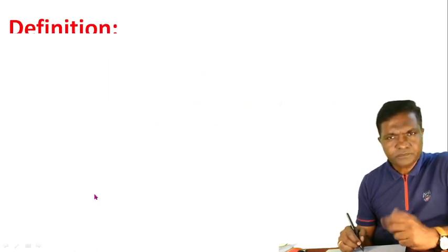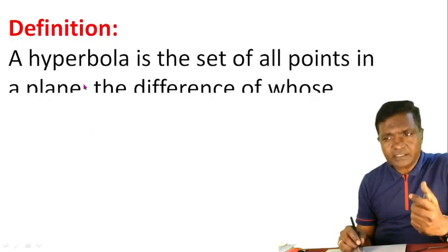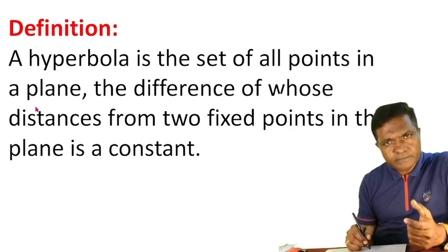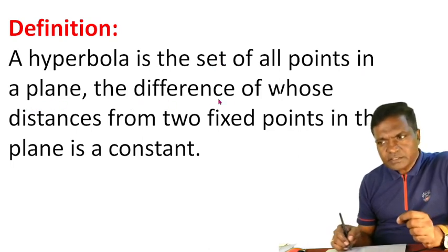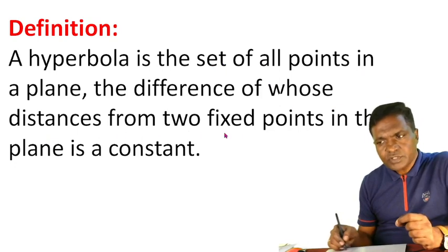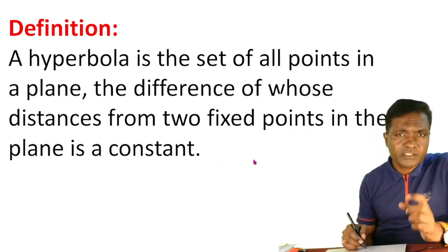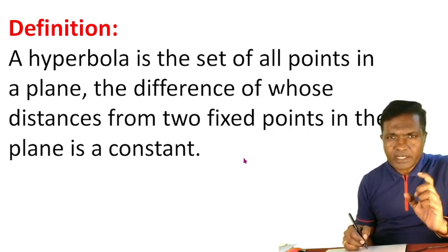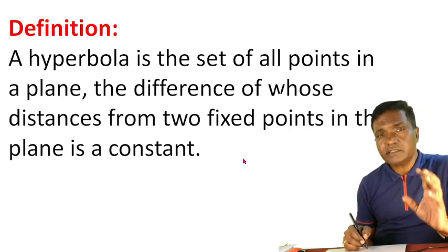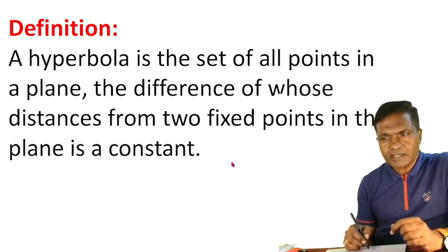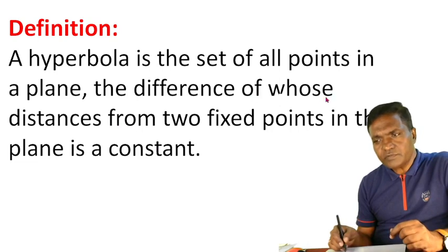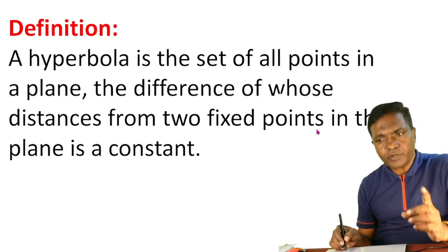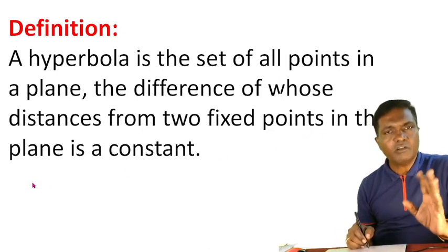Definition: hyperbola is the set of all points in a plane such that the difference of whose distances from two fixed points in the plane is constant. So, hyperbola is a set of points where the geometrical condition satisfies — the difference of distances from two fixed points is always constant.